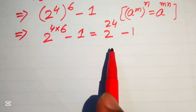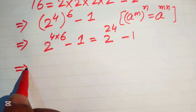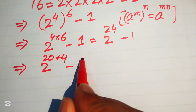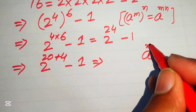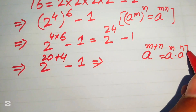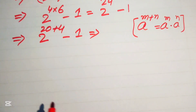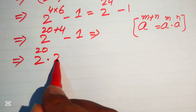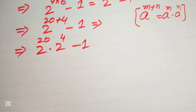We rewrite this expression by breaking the exponent 24 as 20 plus 4, giving 2 to the power of (20 + 4 − 1). Now we apply the exponent law: a^(m+n) = aᵐ × aⁿ. So we can write this as 2 to the power of 20, multiplied by 2 to the power of 4, minus 1.